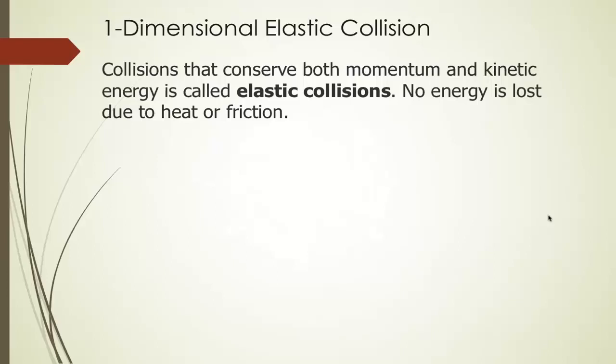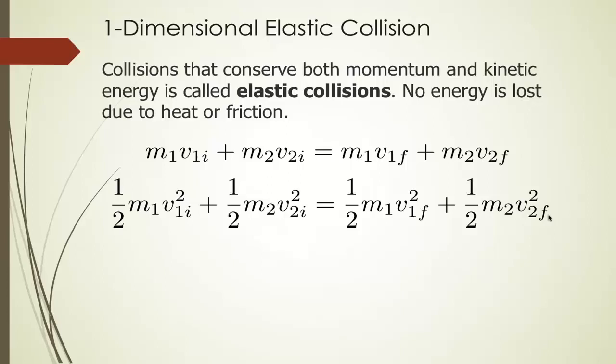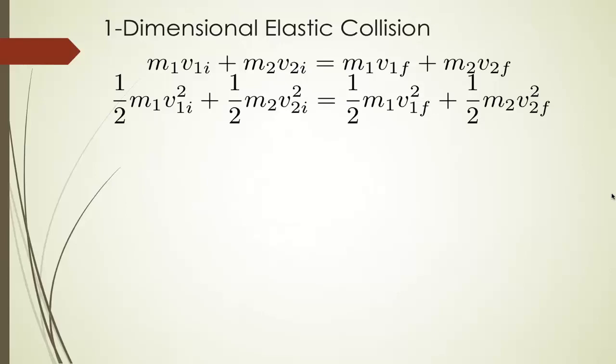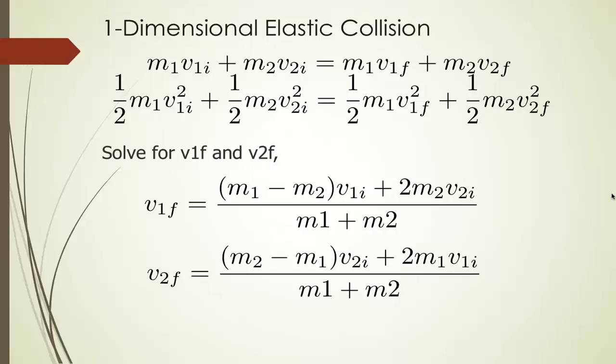A collision that conserves both momentum and kinetic energy is called an elastic collision in physics — no energy is lost due to friction or heat. We have these two equations and only two unknowns: the final velocity of the first object and the final velocity of the second object. A little bit of algebra can solve for those two unknowns. If I solve for v1 final and v2 final, I get a simple set of equations. We just plug those in to simulate elastic collision.